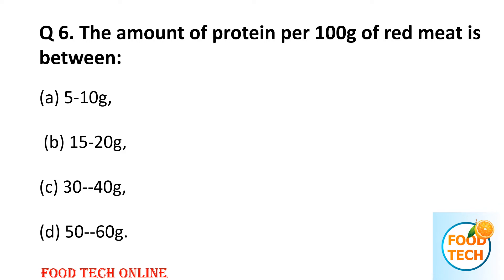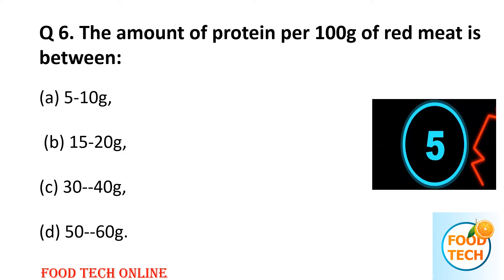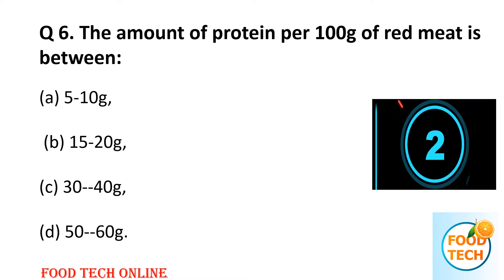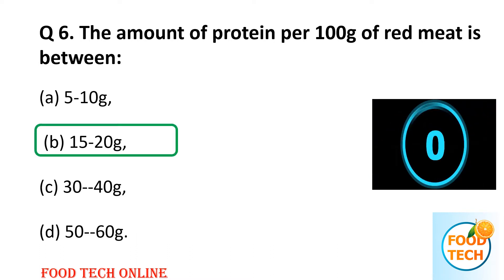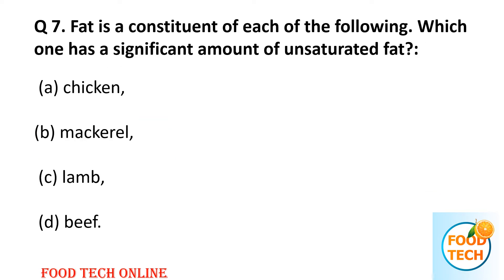Question 6: The amount of protein per hundred grams of red meat is between: A: 5 to 10 grams, B: 15 to 20 grams, C: 30 to 40 grams, D: 50 to 60 grams. Answer: B, 15 to 20 grams.